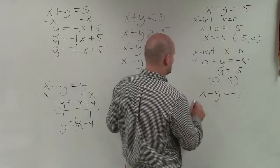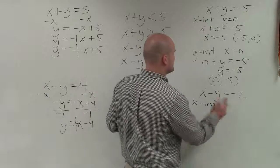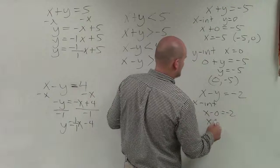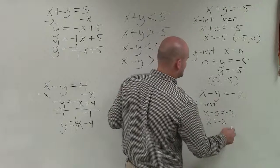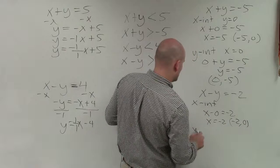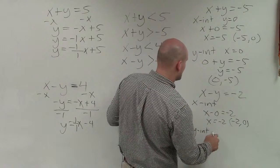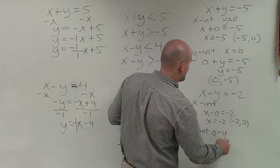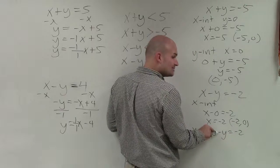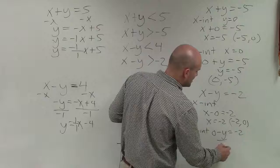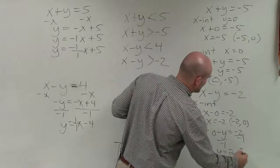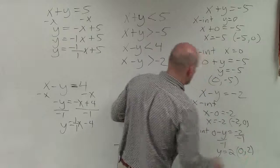For the x-intercept of x minus y equals negative 2, I put 0 in for y: x minus 0 equals negative 2, so x equals negative 2, giving the coordinate negative 2 comma 0. For the y-intercept, I put 0 in for x: negative y equals negative 2, so y equals positive 2, giving the coordinate 0 comma 2.